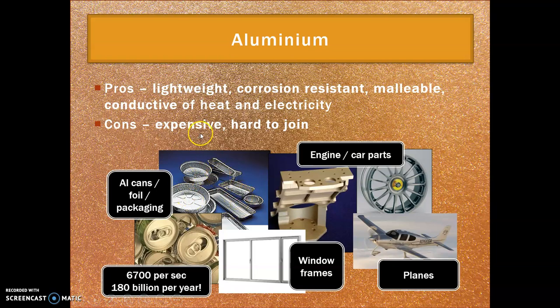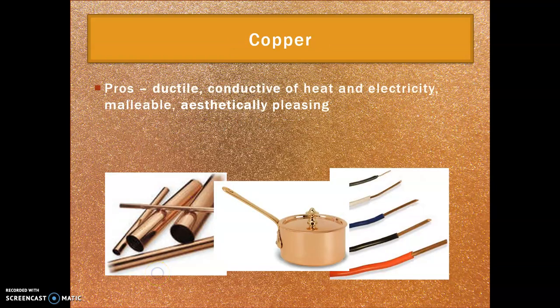However, aluminium is expensive — it's extracted from bauxite, which is a very expensive process that uses a lot of electricity. It's also hard to join. Those aluminium cans — around 600 to 700 a second, or 180 billion a year — we really do need to recycle those to keep aluminium in the loop.